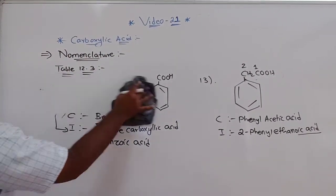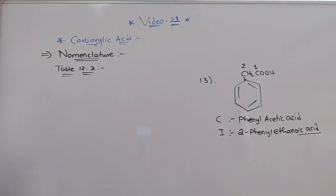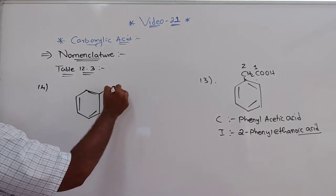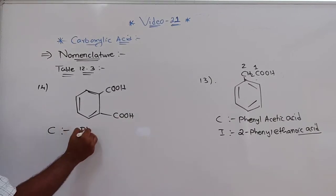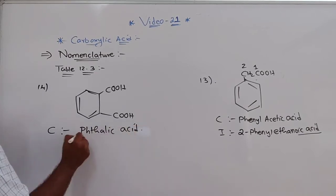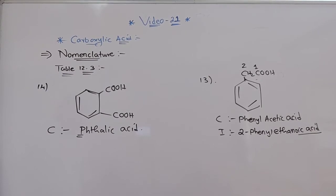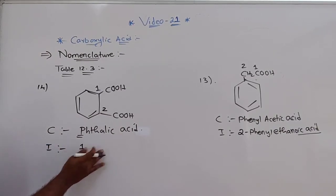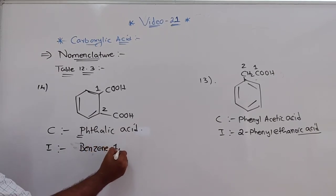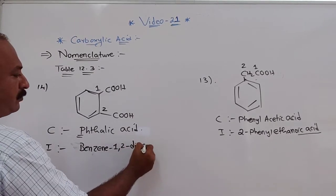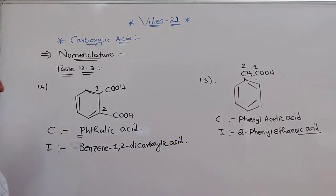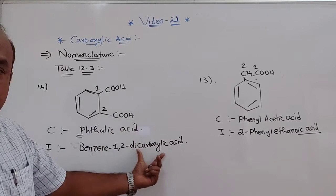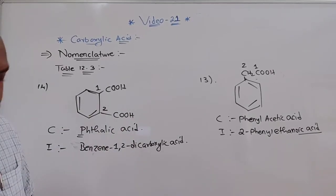The 14th example has a benzene ring with COOH groups at the first and second positions. The common name is phthalic acid — P is silent, so you write thalic acid, not P-thalic acid. The IUPAC name is benzene-1,2-dicarboxylic acid, because the substitutions are at positions 1 and 2.